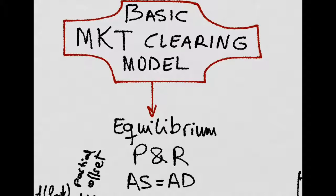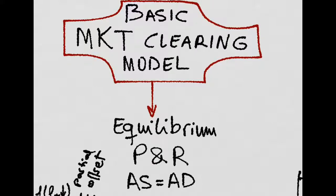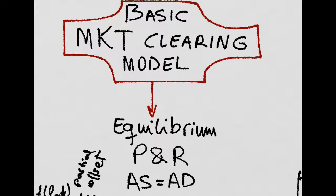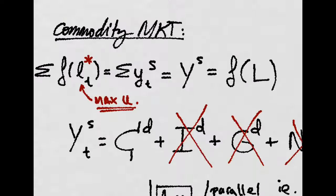Now let's see the basic market clearing model in which all markets are in equilibrium. Aggregate supply is equal to aggregate demand, and we will find the equilibrium price and the equilibrium interest rate for the economy. Let's take first the commodity market.